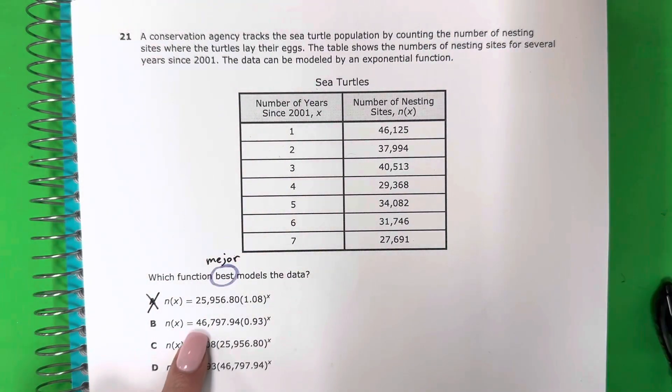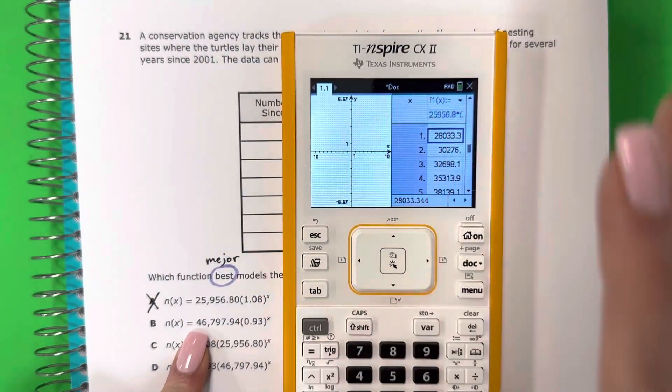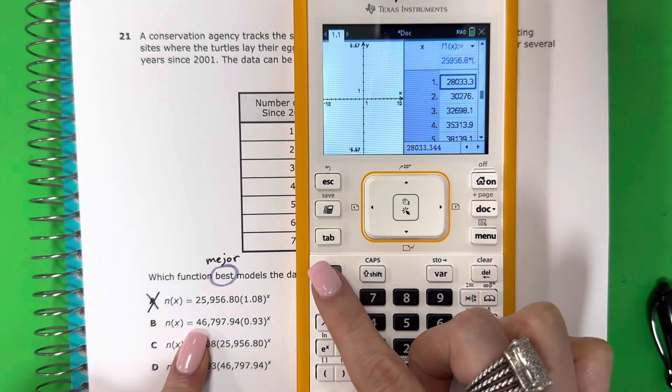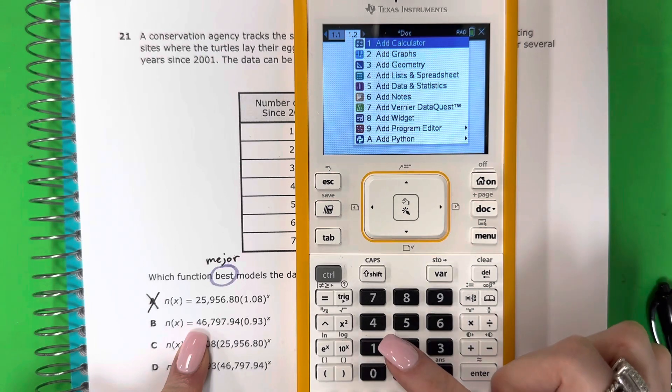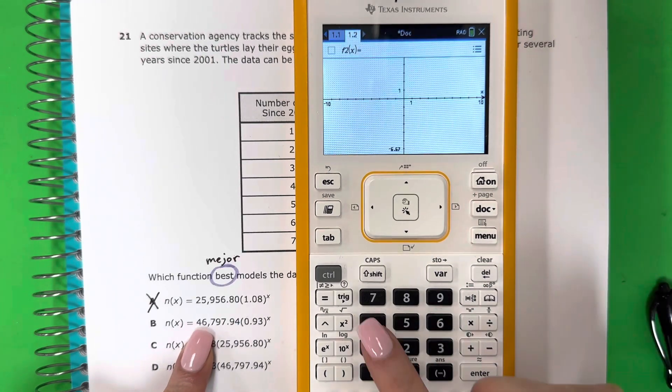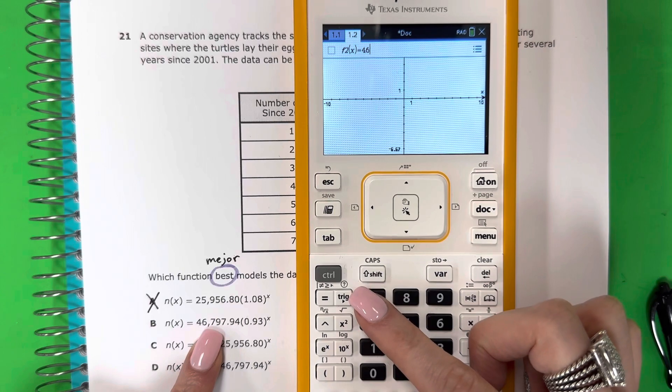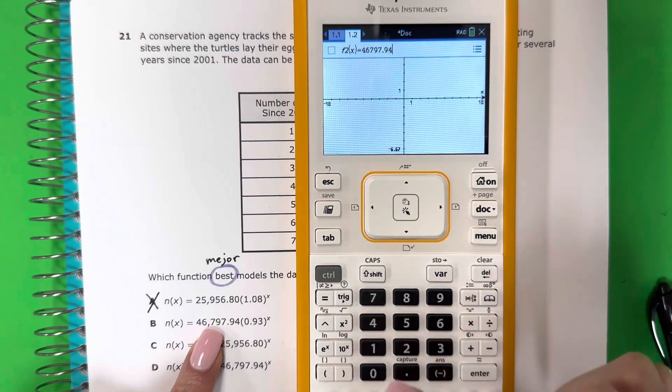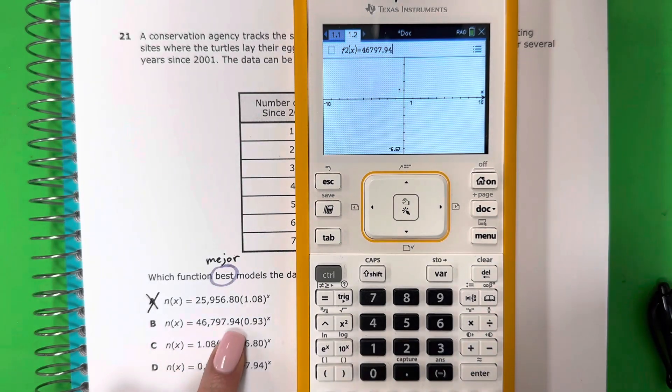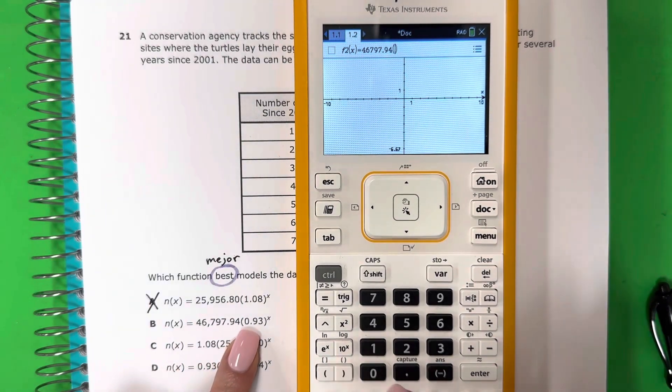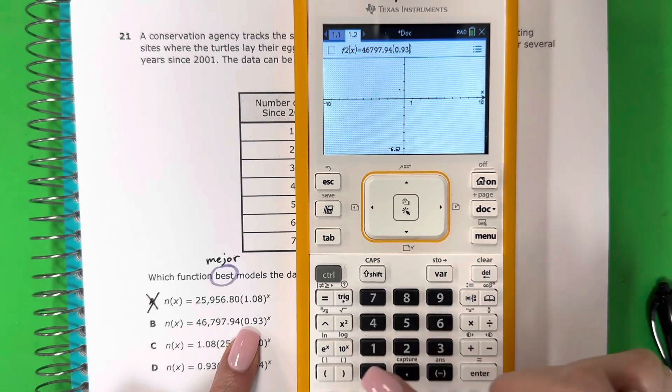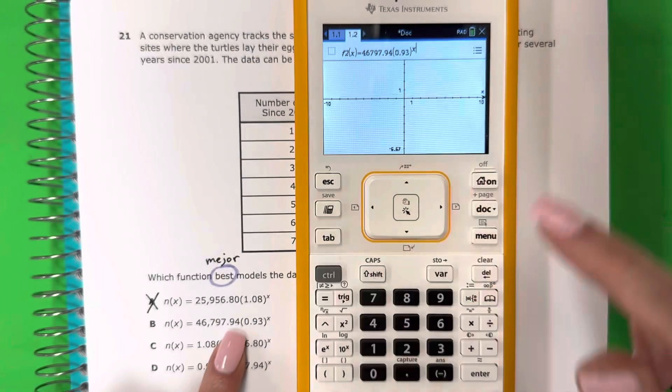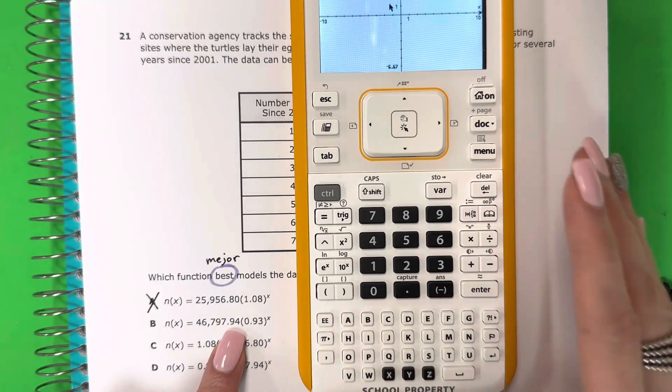Let's go ahead and take a look at B. We're going to do B. Let's make a new page. Una nueva página, nueva pestaña. Control, dock. And then two again. Let's go ahead and do 46,797.94. Remember, no comma, sin coma. And then parenthesis, 0.93, parenthesis, exponent, x. Check. Push enter. Let's do our table, control T.